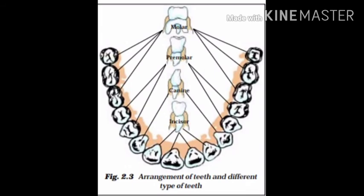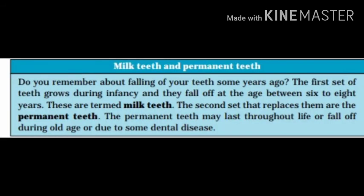We call the front cutting teeth incisors, the pointed ones canines, the next four premolars, and the last six molars. Each type of tooth has a different function. Now let's know about the milk tooth and the permanent tooth.